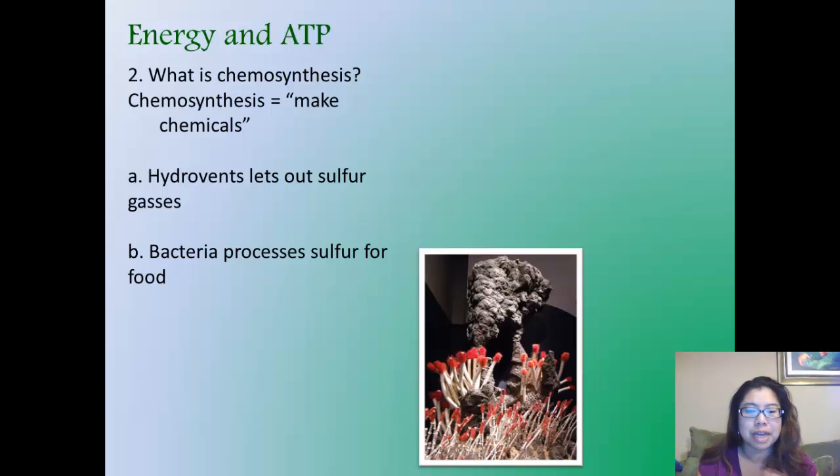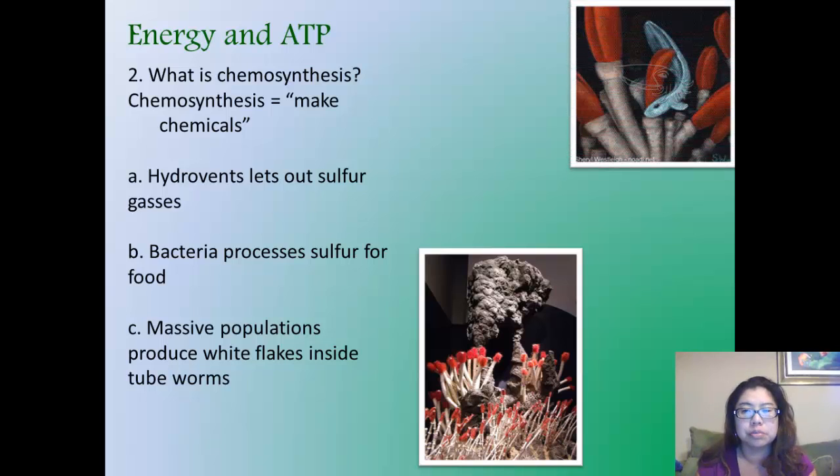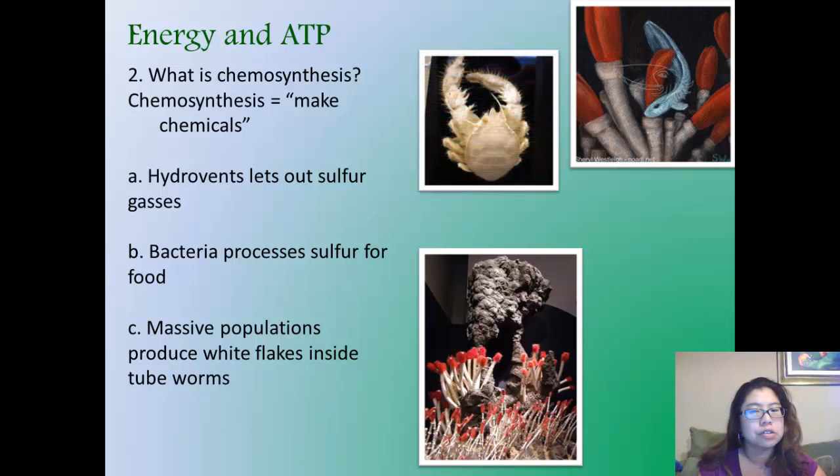Then their massive populations produce these white flakes that are inside the tube worms. The tube worms, they have a relationship which allows them to grow. This is in a deep sea environment, which also allows other species to have form that only lives by these hydrothermal vents. You can tell this crab here is albino. They have no reason to have any color since they live in the dark. And that the bacteria is the basis of this unique community.